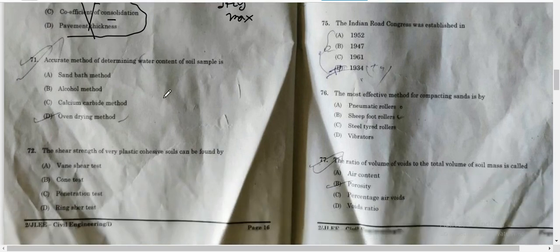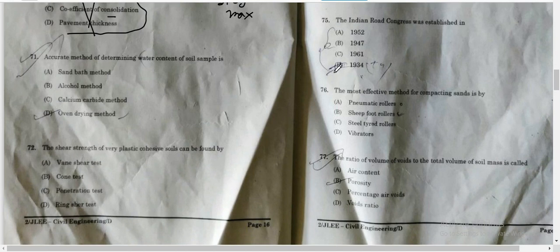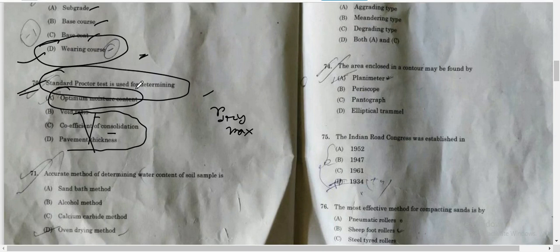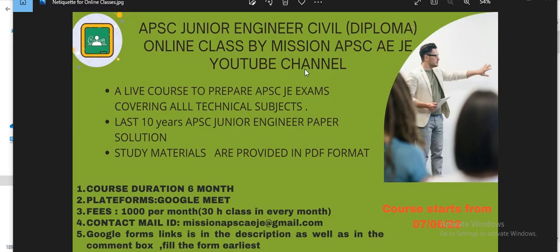In the next part we'll move to question number 71 to 80. This is part number two. Part one video is in the playlist. If you are interested in Junior Engineering Civil diploma online classes, you can contact through this mail ID: missionapscejee@gmail.com. The course fees is 1000. The course already started a week ago. Google form links are in the description box and comment section. You can also contact through the mail ID. Thank you for watching.